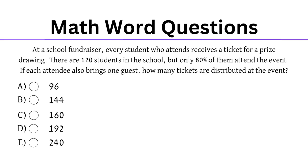This first question has a lot of text, and our first job is to find the relevant information. As most of it is a waste of time, we can skim it, focusing on the numbers and key information associated. What we'll find is the total number of students in the school is 120, 80% of students attend, each attendee brings one guest, and each person who attends receives one ticket. Our goal is to find out how many tickets are distributed at the event.